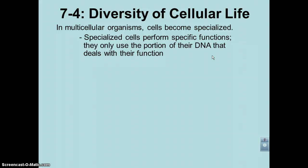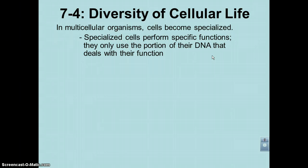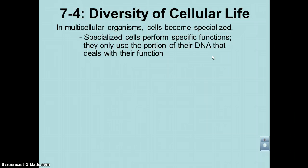We're first going to start off with multicellular organisms. Multicellular organisms are unique because it's not possible to have a single cell do every single function that a living thing needs to do. This happens in unicellular organisms — for example, a bacterium, a paramecium, or an amoeba. These single-celled creatures must perform every function required for life within that one cell.